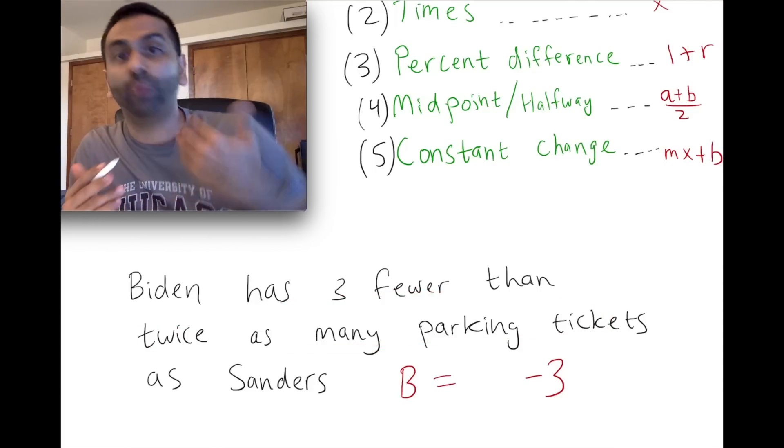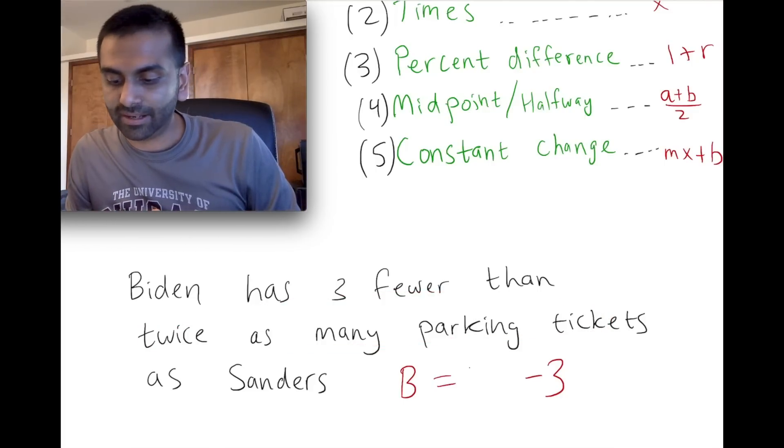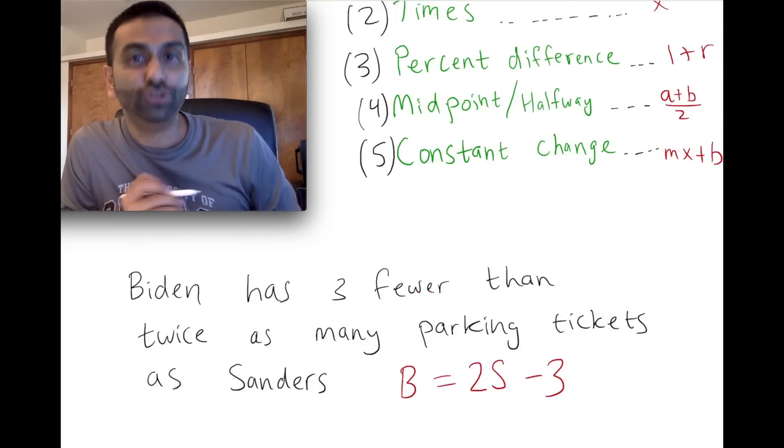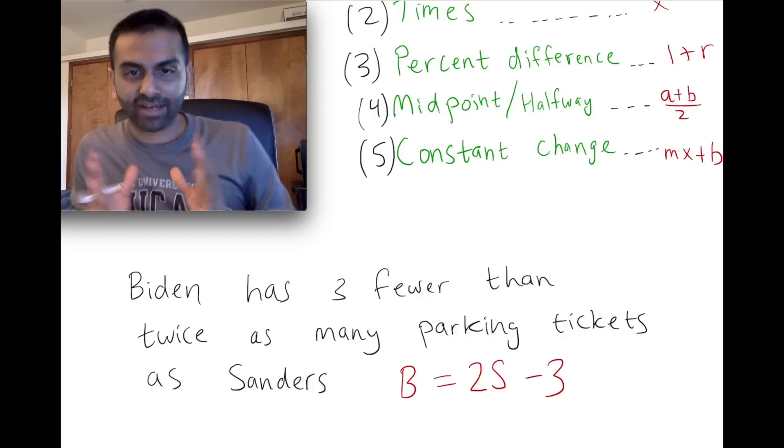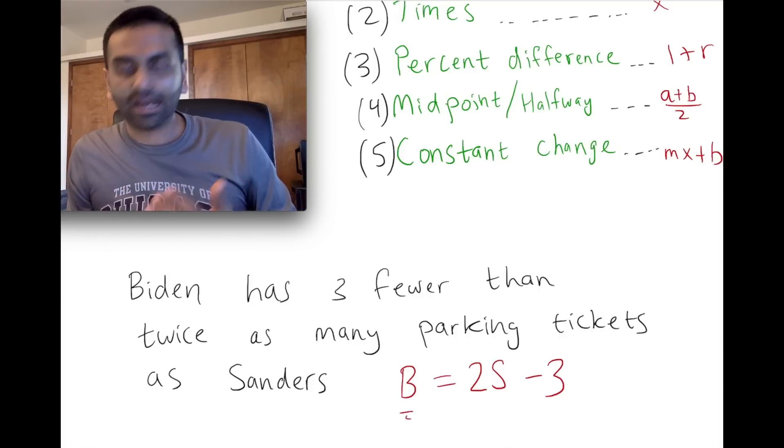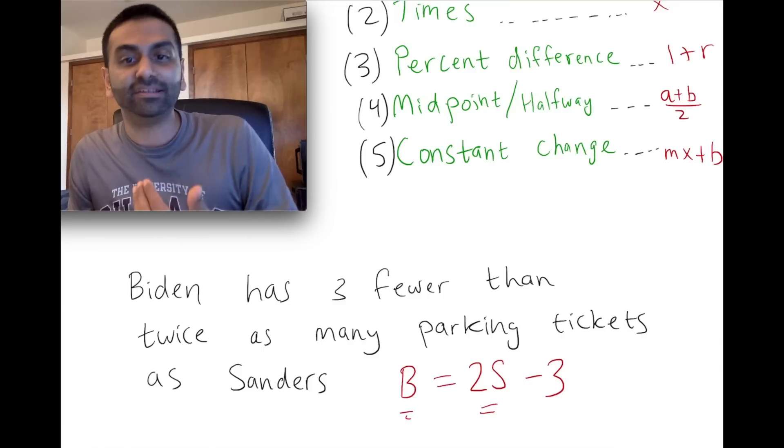Well, whatever Sanders has, twice as many as that's just going to be not s but two s. So our final answer here is that b, however many parking tickets Biden has, is well, twice as many as Sanders has